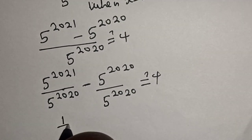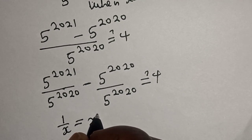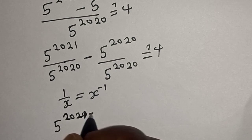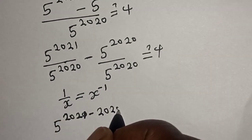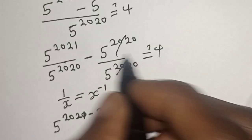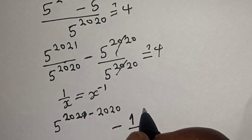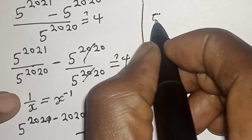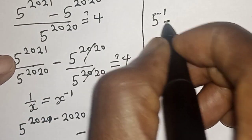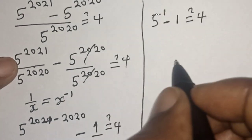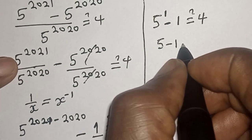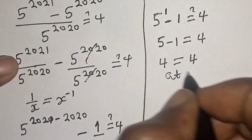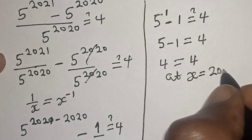Take note that 1 over s is equal to s raised to power minus 1. Then this becomes 5 raised to power 2021 minus 2020, minus 5 raised to power 2020 minus 2020. This one will cancel this, that is 1, must be equal to 4. Then this is 5 raised to power 2021 minus 2020, that is 1, minus 1 must be equal to 4. So, 5 raised to power 1 is 5, minus 1, this is equal to 4. The left hand side 4 is equal to the right hand side 4, at s is equal to 2020.